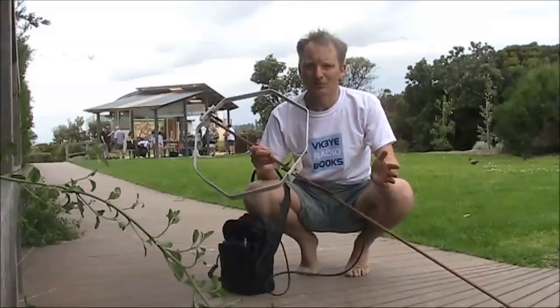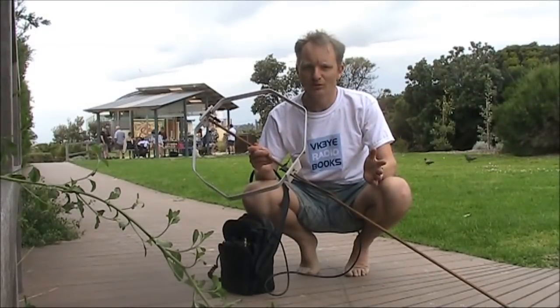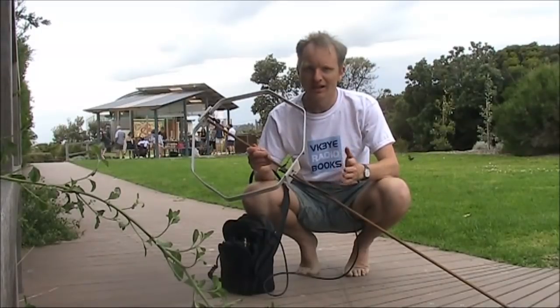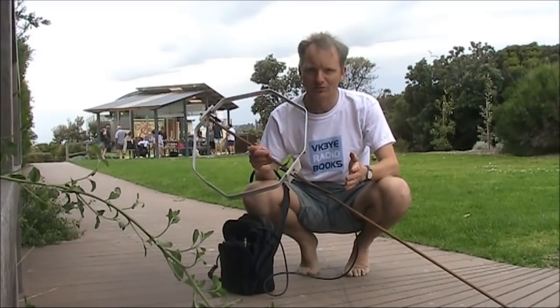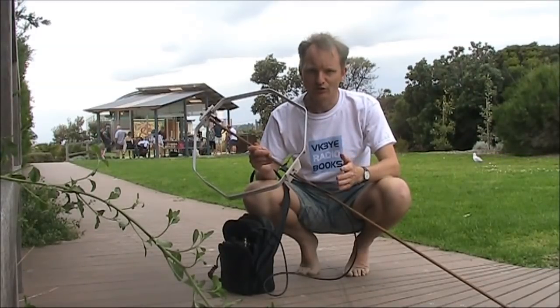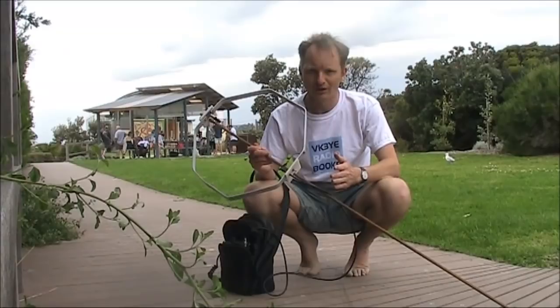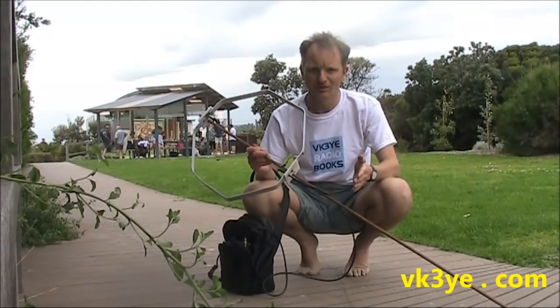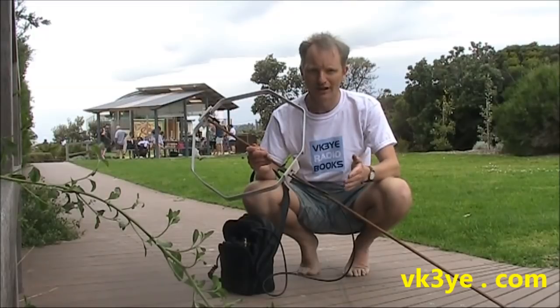If you want to get more from amateur radio, check out my ebooks: Hand Carried QRP Antennas, Minimum QRP, 99 Things You Can Do With Amateur Radio, and Getting Back Into Amateur Radio. They're available in electronic form for around $5 US. Just visit my website vk3ye.com or search their titles on Amazon.